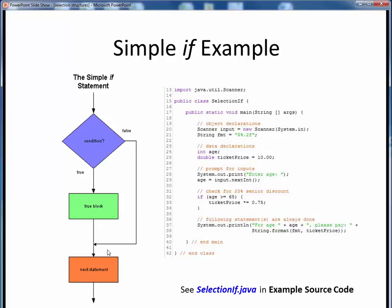Regardless of what age is specified, we always finish up by echoing out the input age and the resulting ticket price, which is formatted with two decimal places according to this format specifier. And this post-selection block statement corresponds to this next statement block in the flowchart. To see this code execute for several different values, please take a moment now to pause this video and view the short code walkthrough for selectionif.java.